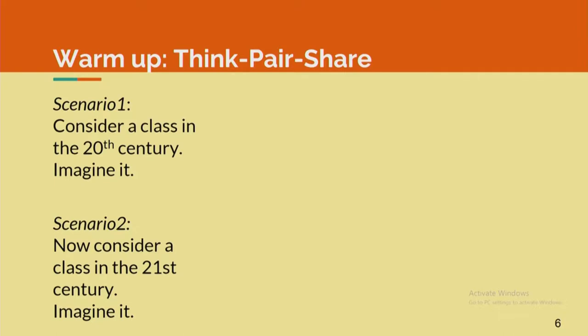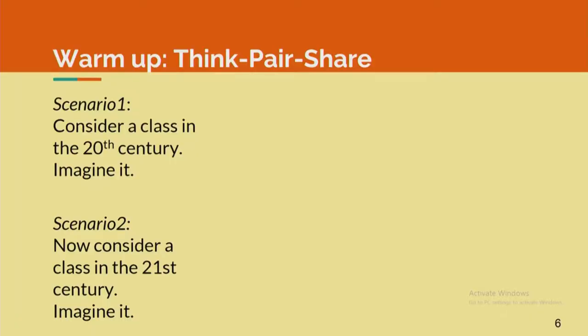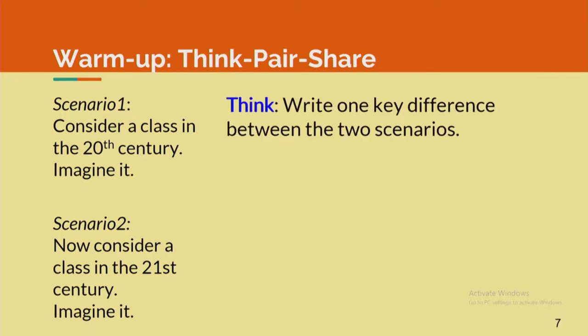Here is another warm-up activity: a think-pair-share with three phases. There are two scenarios to consider. In scenario one, consider a class in the 20th century — something you took as students 30 or 40 years ago, or something you taught in the 1980s or 90s. Imagine the physical layout, what you did, what students did. Then switch to scenario two: a class in the 21st century that you are teaching today. Write one key difference between your scenarios.